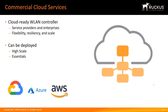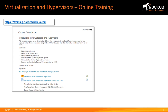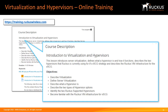The Ruckus Virtual SmartZone also provides a hosted cloud-ready wireless LAN controller for service providers or enterprises, allowing for the offload of hardware management to cloud service providers while providing exceptional access. With cloud services, you gain flexibility, resiliency, and scale to your wireless LAN deployments. Virtual SmartZone can operate in the hosted environment in either High Scale or Essentials profile. Virtualization is a complex subject, and if you'd like to know more, you should view the Introduction to Virtualization and Hypervisors on the Ruckus Training Portal.